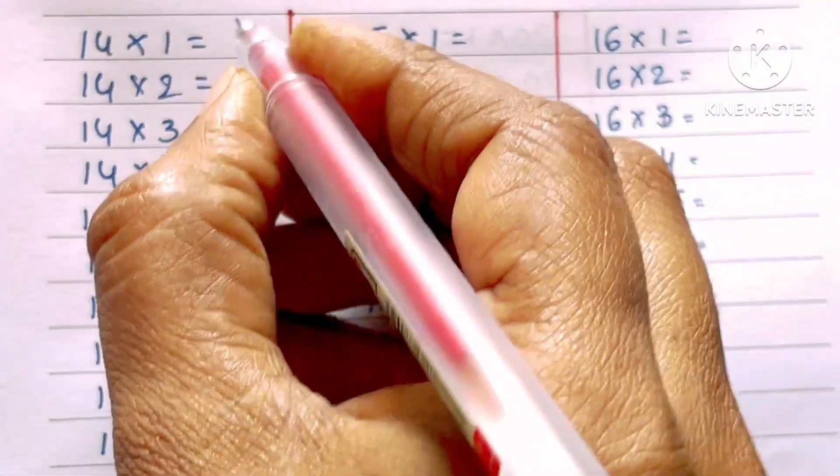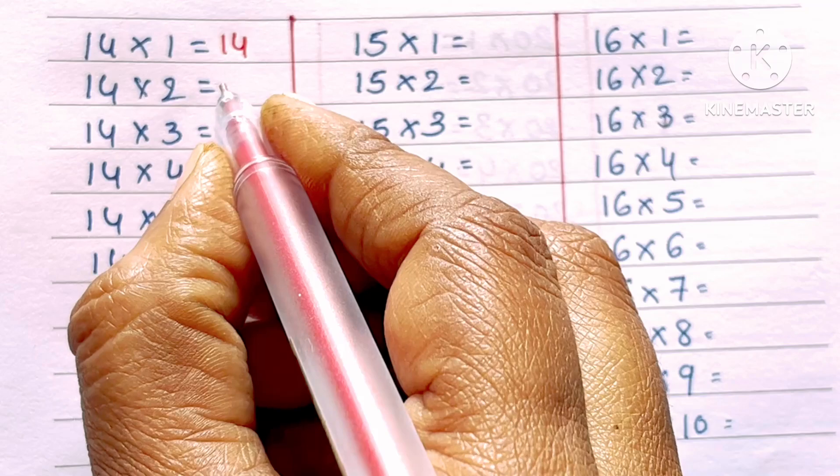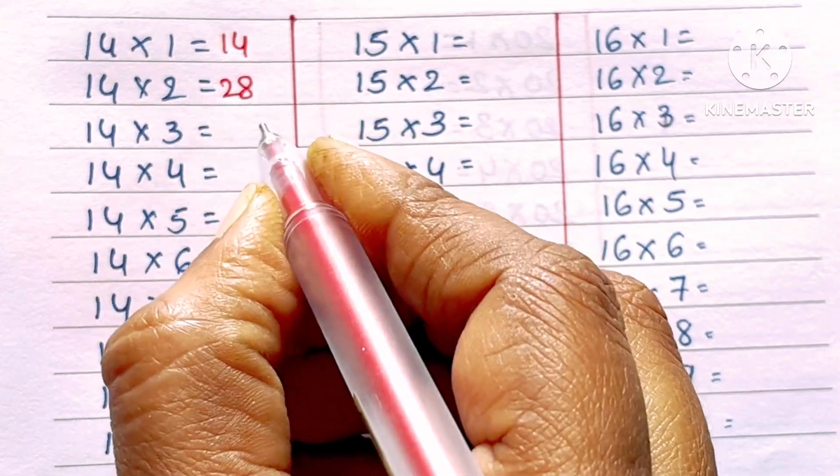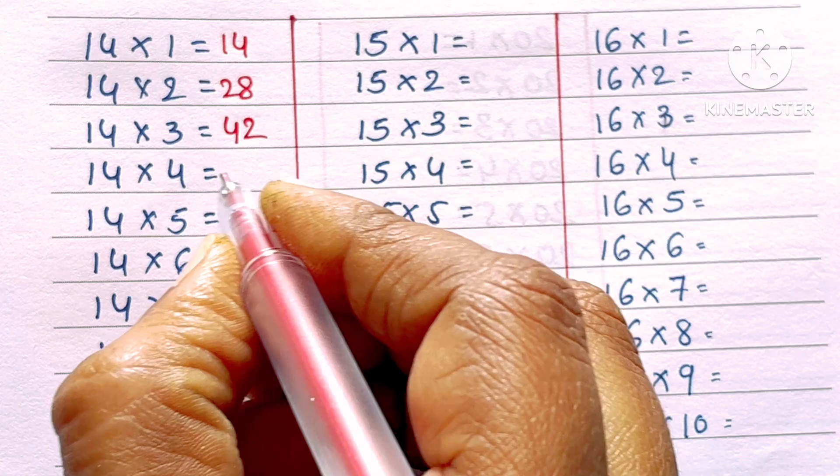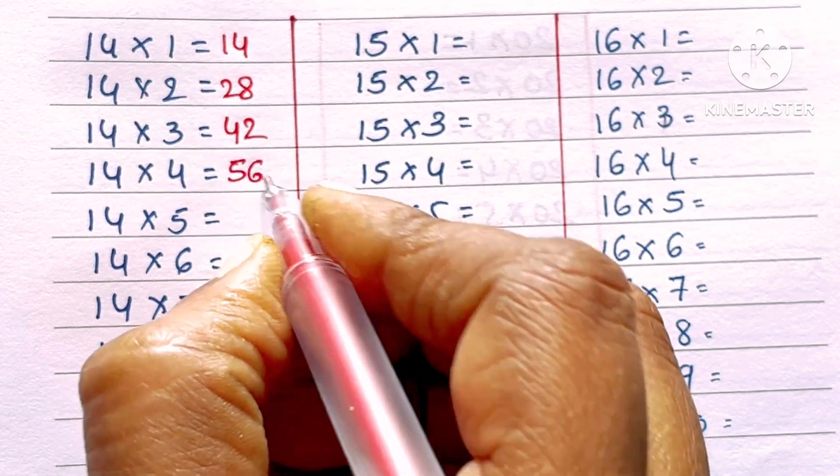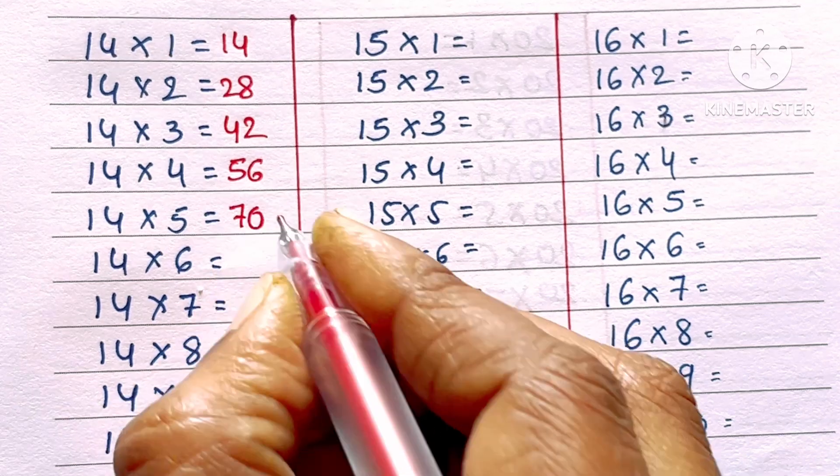14 ones are 14, 14 twos are 28, 14 threes are 42, 14 fours are 56, 14 fives are 70.